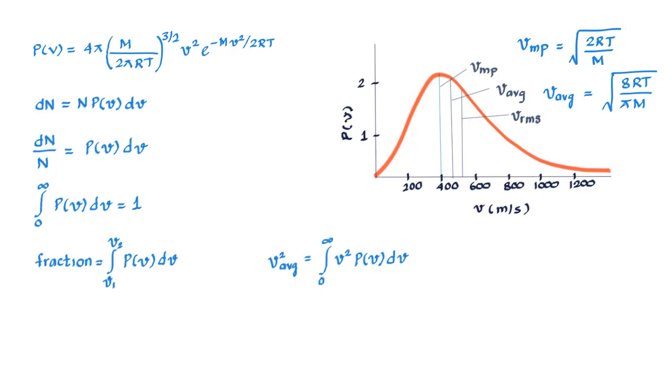And when you calculate this, what you get is v square average is equal to 3RT upon M, and therefore the square root of v square average or the RMS velocity is equal to root of 3RT upon M.